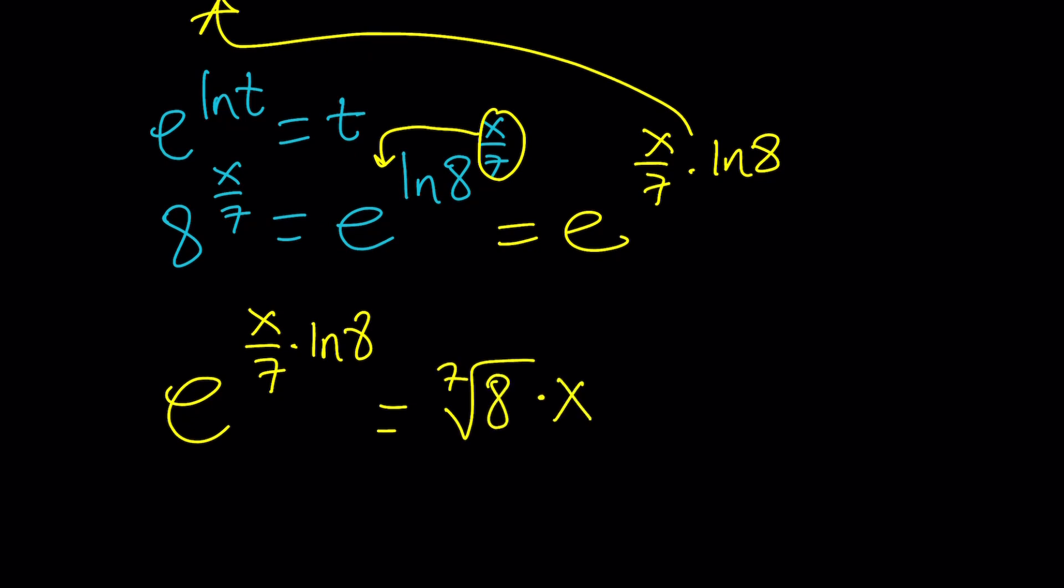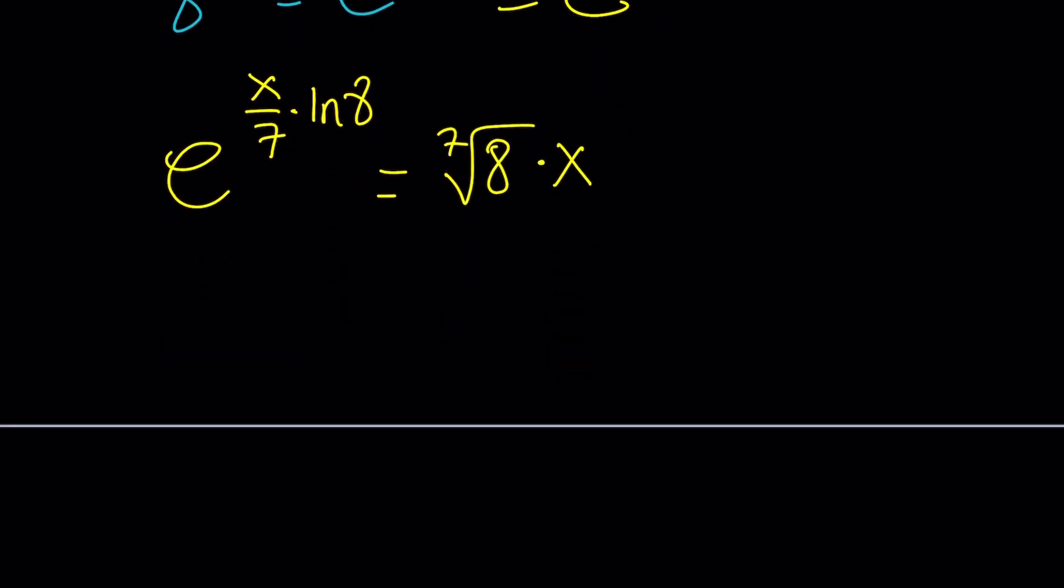Now, if you bring the x to the left, you're going to have to deal with either x to the power negative 1 or 1 over x. They're not good for our purposes. We want x to the power 1. So let's go ahead and bring the exponential instead. So let's divide both sides by the 7th root of 8 first. So this is what it's going to look like: x divided by e to the power x over 7 ln 8 equals 1 over 7th root of 8.